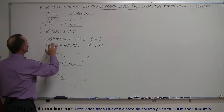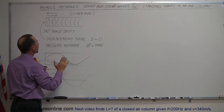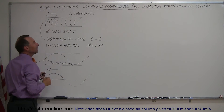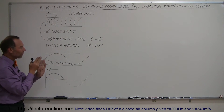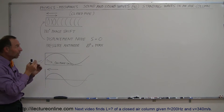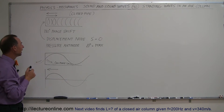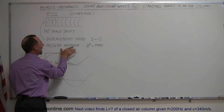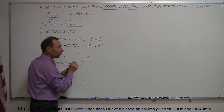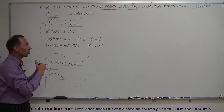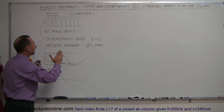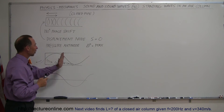At the closed end we have what we call a displacement node. The incoming and outgoing waves have zero displacement at that point — no variation in the position of the air molecules relative to their normal position. At that same moment there is a pressure antinode, since displacement and pressure are 90 degrees out of phase, meaning the pressure difference at that point is at a maximum. The wave then bounces off and starts going back.